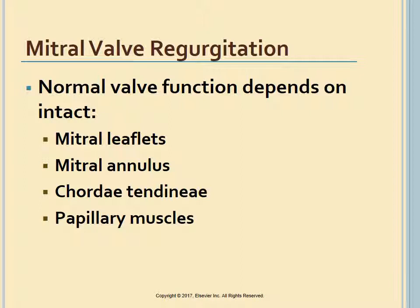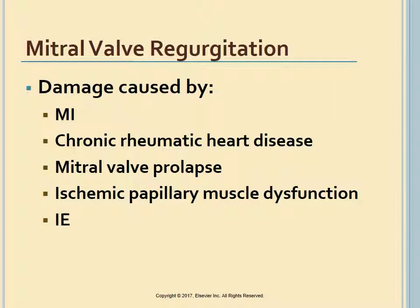Mitral valve function depends on intact mitral leaflets, mitral annulus, chordae tendineae, papillary muscles, left atrium, and left ventricle. A defect in any of these structures can result in regurgitation. Causes of valve damage include MI, chronic rheumatic heart disease, mitral valve prolapse, ischemic papillary muscle dysfunction, and infective endocarditis. MI with left ventricular failure increases the risk for rupture of the chordae tendineae and acute MR.